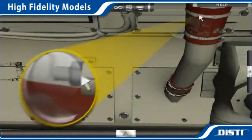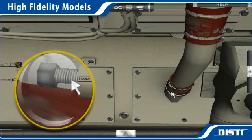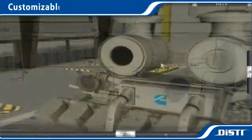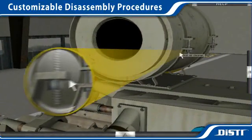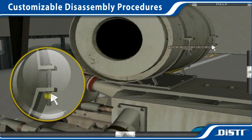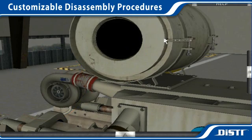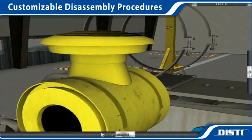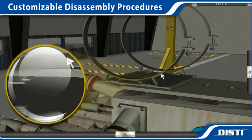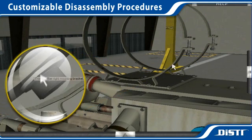Modeling of the finest details, such as O-rings and hose clamps, was required in order to meet training objectives. A customizable XML file is used to determine the steps and conditions that need to be met before a part can be removed. This flexible architecture allows for easy updates to job procedures or customizations required by environment-specific conditions.